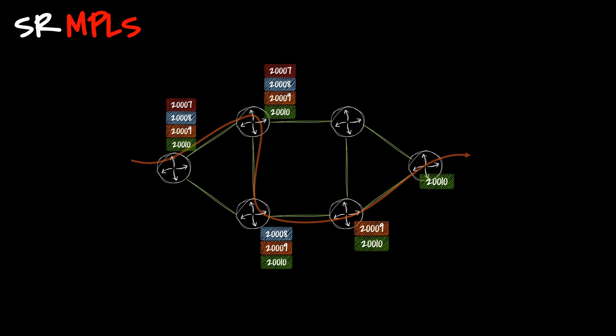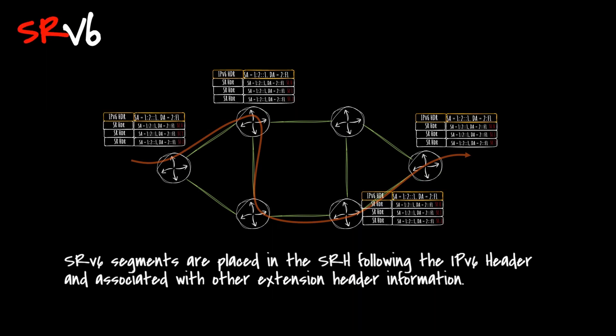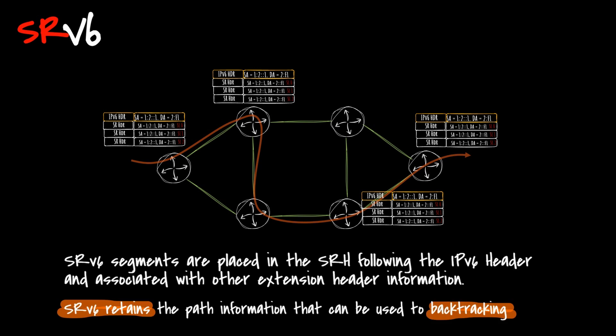Another difference between SRv6 and SRMPLS is that a node does not pop segments in the SRv6 SRH after processing them. This is mainly because the initial design of the IPv6 routing header was not closely related to MPLS, causing the pop option to be unavailable. In contrast to MPLS labels, which are independently placed on top of packets and can therefore be directly removed, SRv6 segments are placed in the segment routing header following the IPv6 header and are associated with other extension headers such as security encryption and verification information. Consequently, SRv6 segments cannot be popped. Because the pop operation is not performed, the SRv6 header retains path information that can be used for path backtracking. Additionally, some innovative designs attempt to achieve new function extensions by reusing the segment routing information in the SRH.